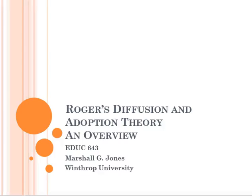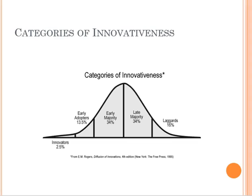This is Marshall Jones at Winthrop University. We've been talking about Rogers' diffusion and adoption theory. We just spent some time in the previous video talking about categories of innovativeness and what they mean. I concluded that in theory that works great, but in practice sometimes things fall apart.